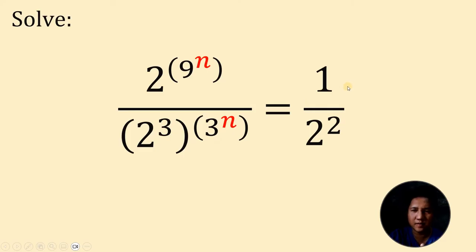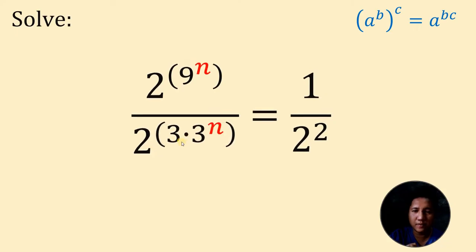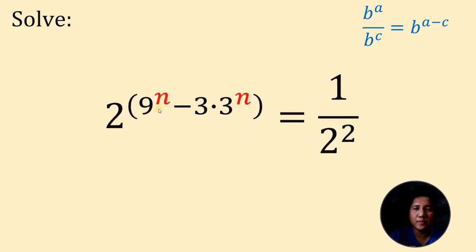Now, how about 1? 1 is just 2 raised to 0, but we will handle that later on. So now let's simplify first. Take note that when we have a raised to b raised to the power of c, it is equivalent to a raised to b times c. Therefore, on the denominator, 2 raised to 3 raised to the power of 3 raised to n can be written as 2 raised to the power of 3 times 3 raised to n. Another law of exponents says that if we have b raised to a all over b raised to c, it is equivalent to b raised to a minus c. Therefore, the left-hand side of our equation can be written as 2 raised to 9 raised to n minus 3 times 3 raised to n.